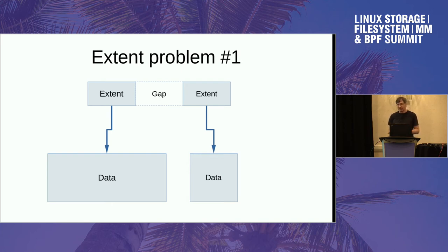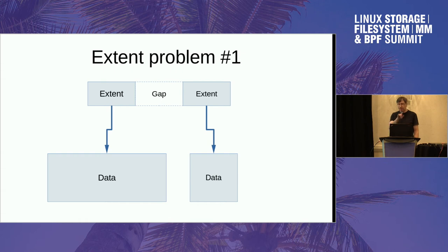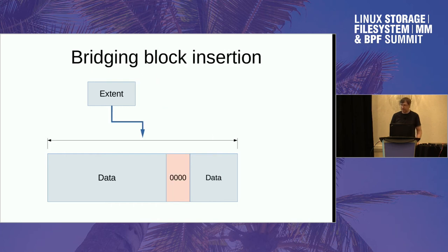The problem itself is relatively straightforward. If you have two extents with a small gap between them pointing to some data, an extent-based file system such as ext4, XFS, or Btrfs can fill in the gap for you. By using a bit more disk space and putting it full of zeros, it can reduce the extent list from three extents to one extent.